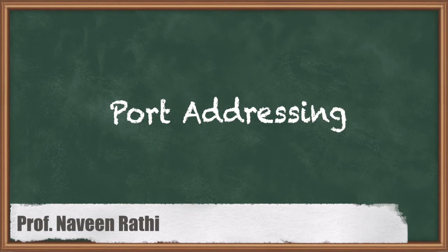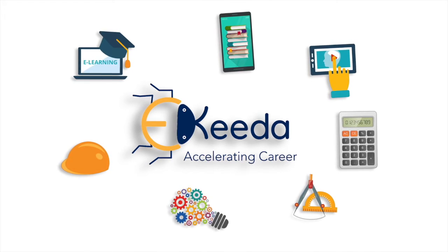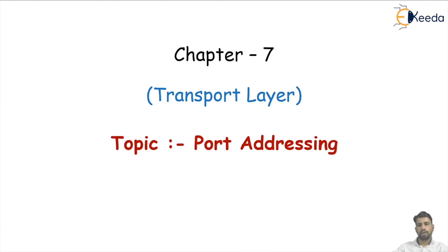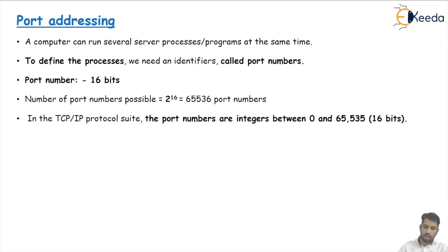Hello students. In Chapter 7, Transport Layer, our topic is port addressing. In our computer, many processes are running simultaneously. To uniquely identify each process, we need some identification parameter, and that identification parameter is called port addressing or the service point access. To define the process, we use this identifier called the port number.